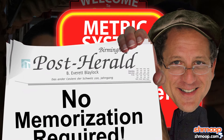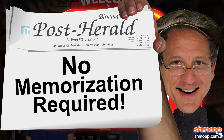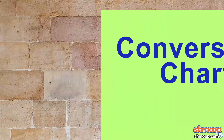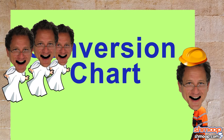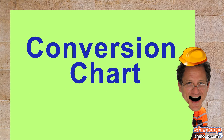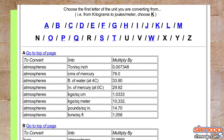The good news is that you don't have to have all those conversions memorized — your brain has enough stuff to worry about. All you really have to do is refer to a conversion chart where someone's already done the dirty work for you. And Shmoop has one, and it looks a little something like this.